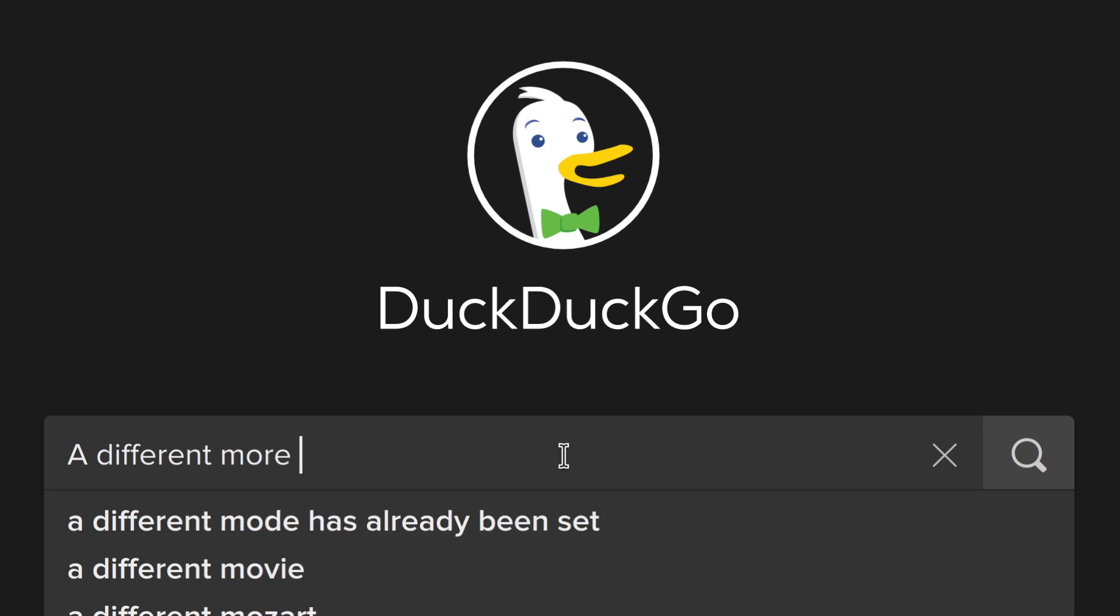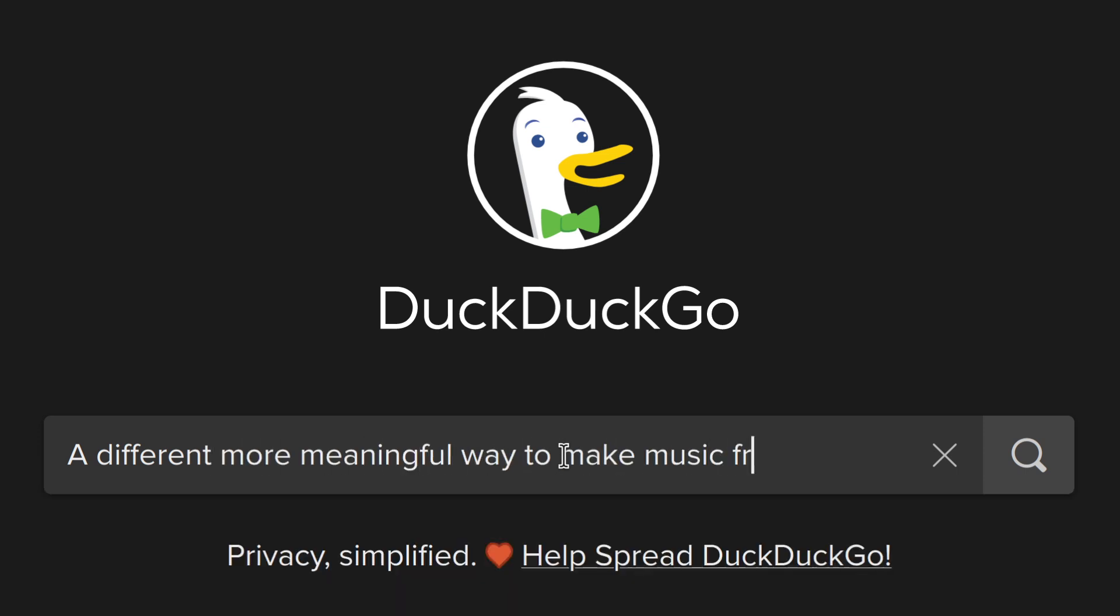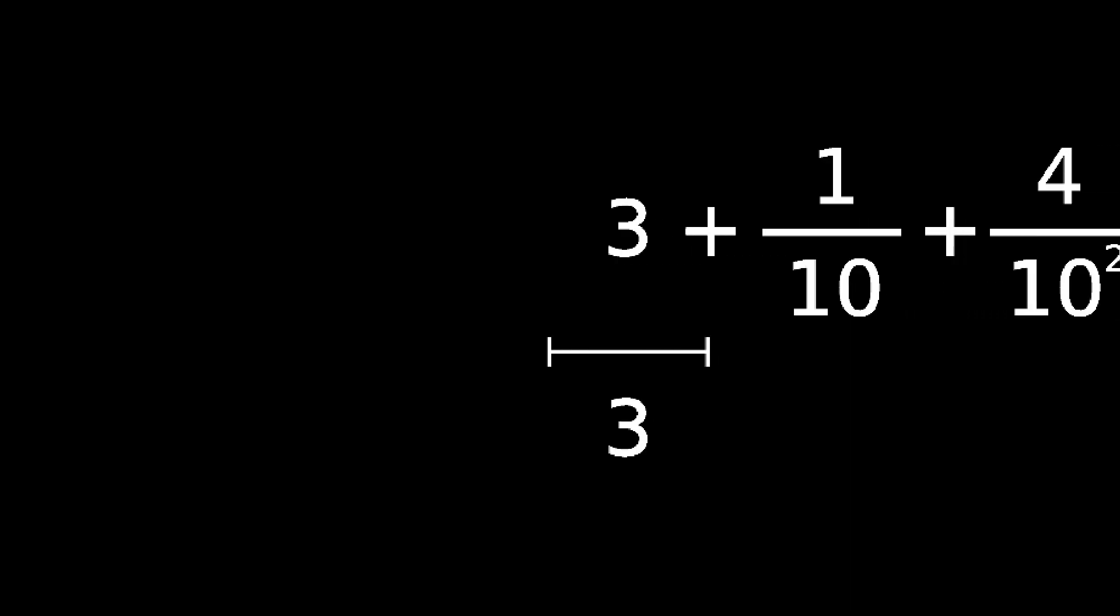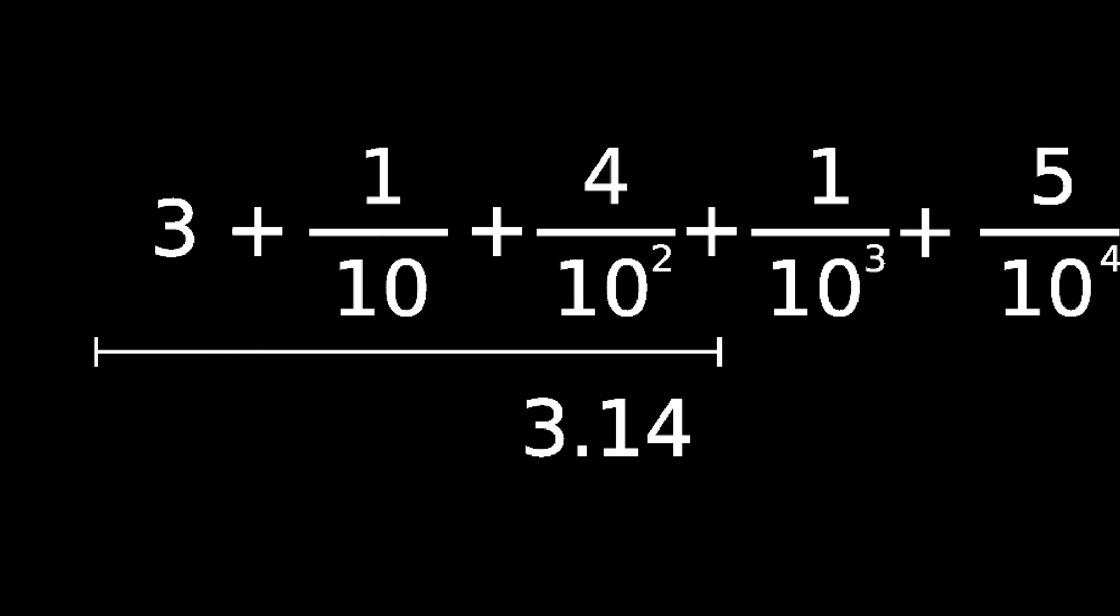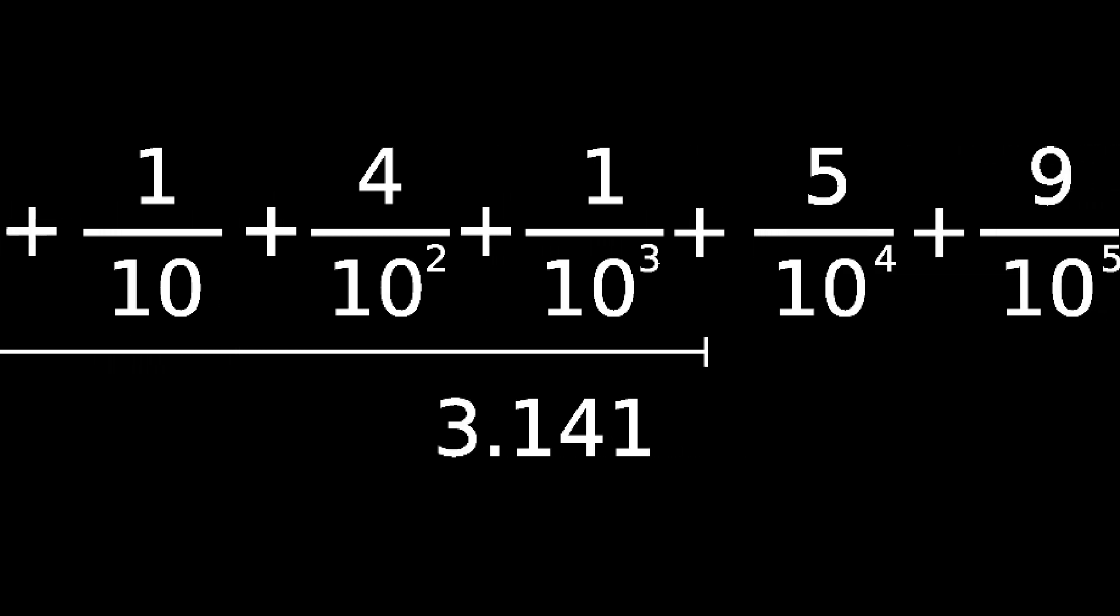In trying to come up with a different, more meaningful way to make music from pi, it occurred to me that the decimal expansion for pi actually represents a kind of infinite series: three plus one over ten, plus four over a hundred, plus one over a thousand, plus five over ten thousand, etc.